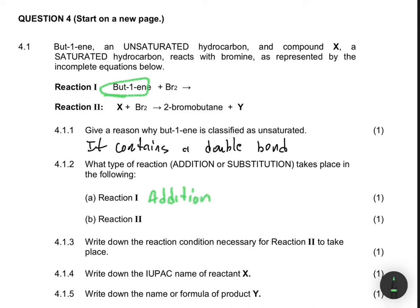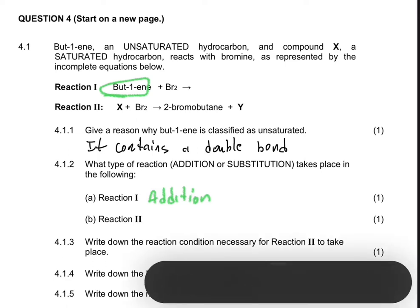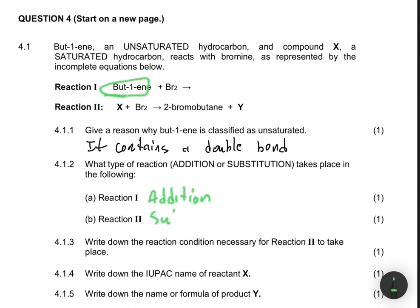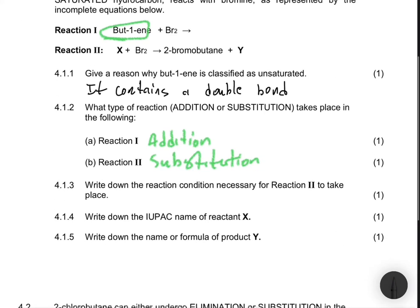Reaction number 2: we have X, which is said to be a saturated hydrocarbon, so it's an alkane. And then we are adding bromine. An alkane can only go elimination or substitution, but we're told here we have to choose between addition or substitution. So clearly our answer here will be substitution.